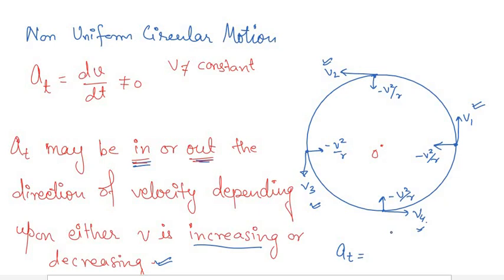This was the basic idea of uniform and non-uniform circular motion. We have studied velocity and acceleration in circular motion — both tangential and radial components. Next, we will work through some example problems on this. Thank you.